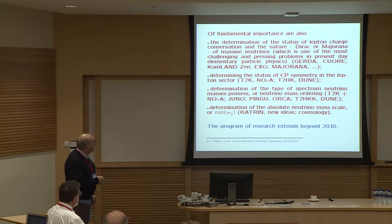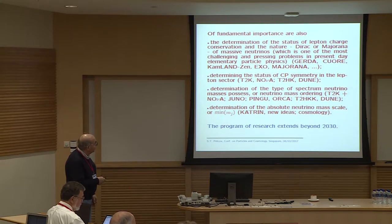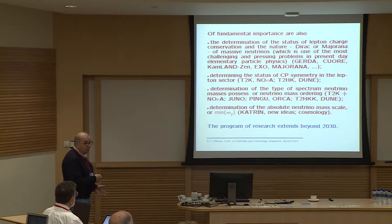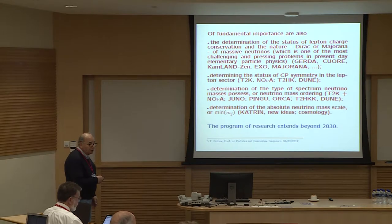The second is the determination of the status of CP symmetry in the lepton sector. The main experimental contribution is expected to come from the currently running T2K and NOvA experiments, and future T2 Hyper-Kamiokande and DUNE experiments. Then we have the problem of determination of the type of spectrum neutrino masses obey, and finally, very loose constraints on the absolute neutrino mass scale, which we would like to determine. Research on these items goes beyond 2030.